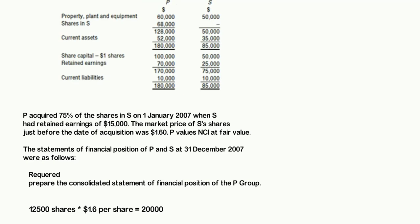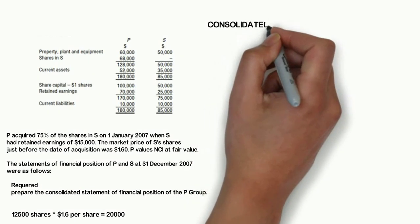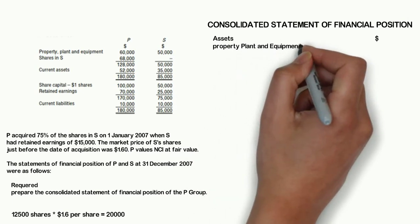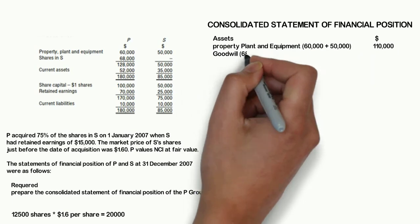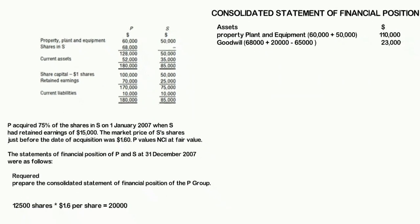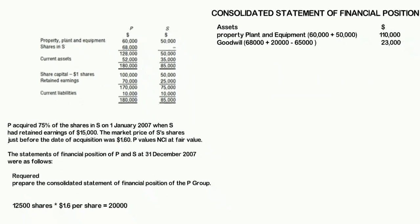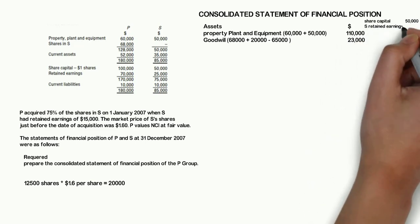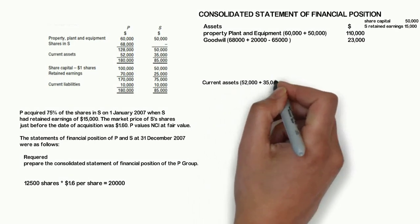The acquisition has formed the group for which P will prepare the consolidated statement of financial position. First, add the amounts of property, plant and equipment of both P and S — that is $60,000 plus $50,000 — resulting in a total of $110,000. Goodwill is calculated by adding the purchase consideration of $68,000 and the fair value of NCI of $20,000, minus $65,000 — the fair value of net assets of S, made up of $50,000 share capital and $15,000 retained earnings. Hence, goodwill is $23,000.